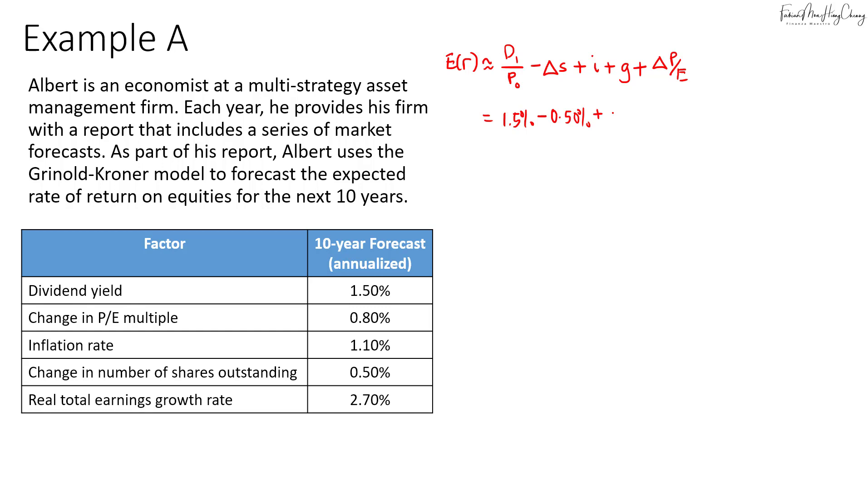Then we add in the expected inflation, 1.1%, we add in the real total earnings growth rate, 2.7%, and then we add in the change in P/E multiple, that's 0.8%. So that will equal 5.6%.